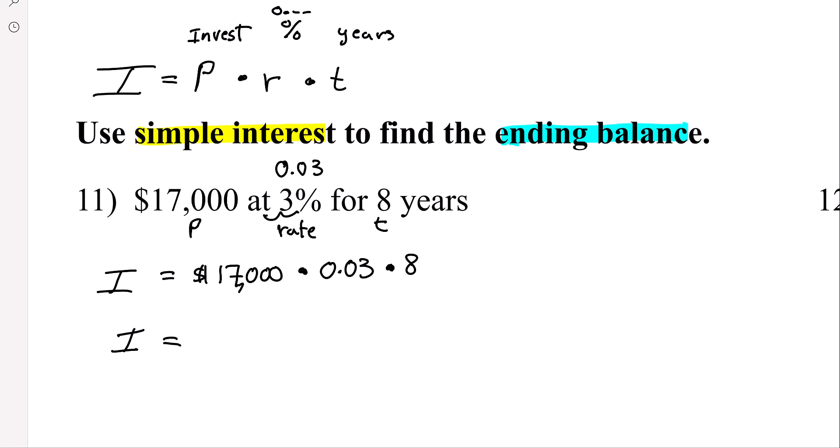So the interest, let me see if I did that, I want to make sure I did that. All right, $17,000, because my calculator was doing something weird. Okay, $4,080.